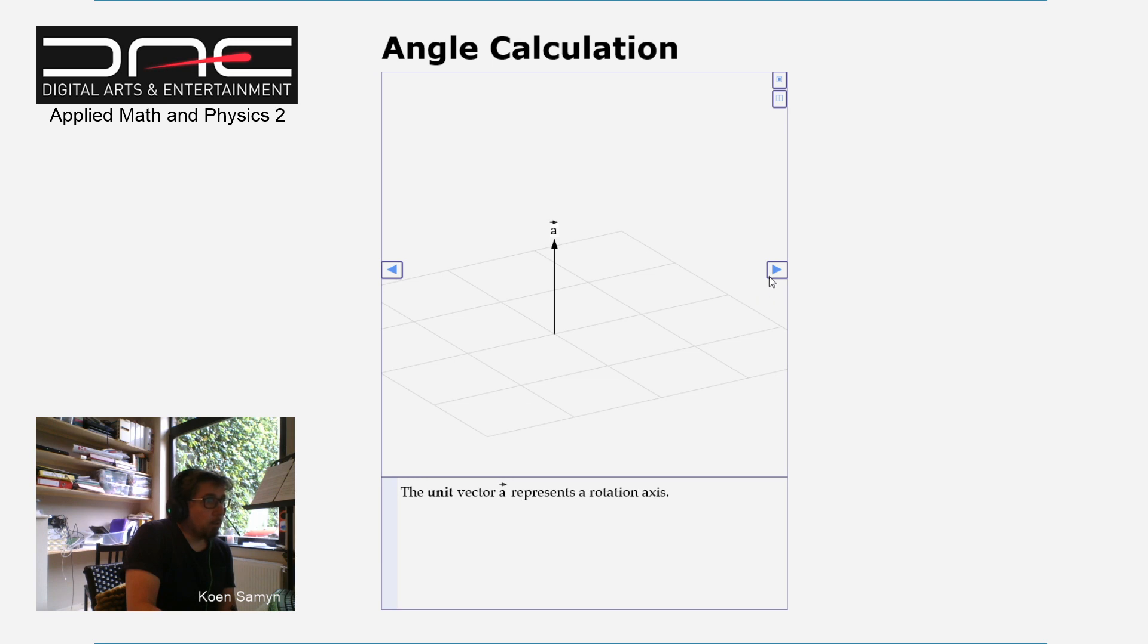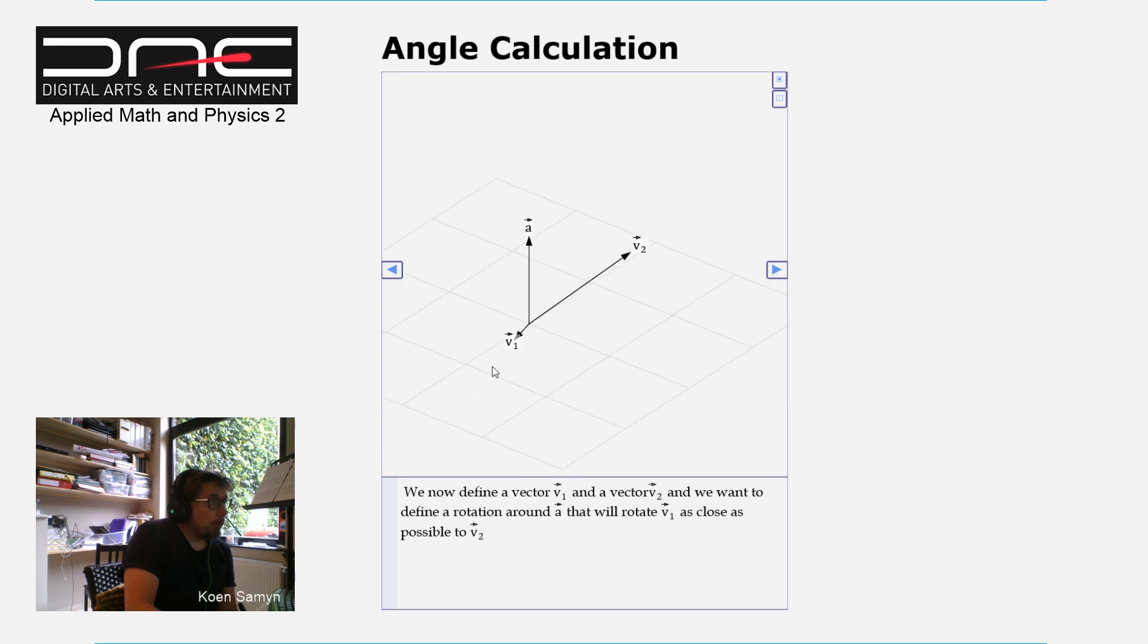What is the problem? We commonly define the problem as: we want to rotate a vector V1 around an axis A and make it match the vector V2. So this is a typical problem in inverse kinematics, for example.